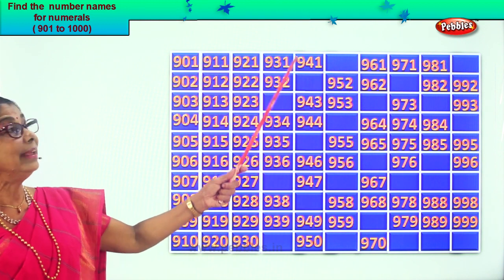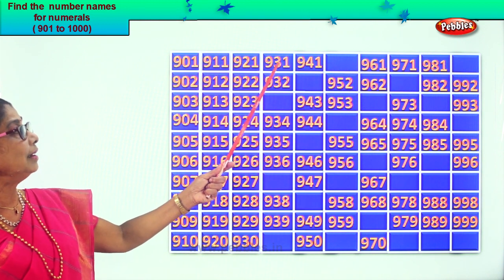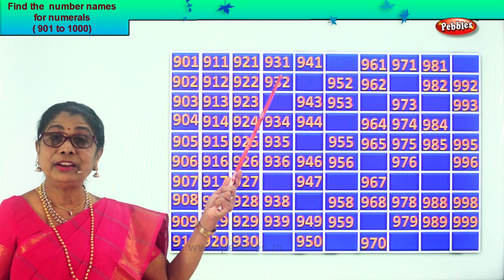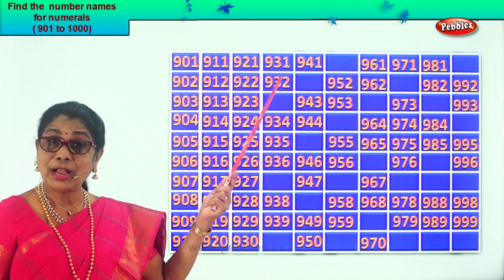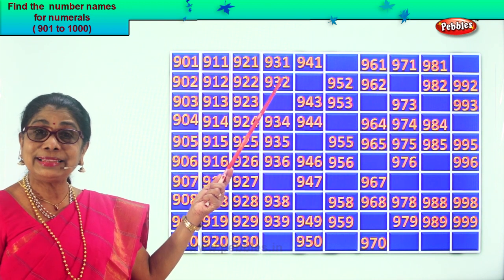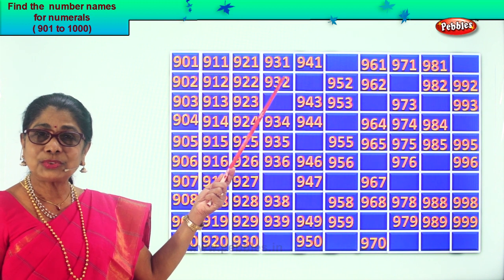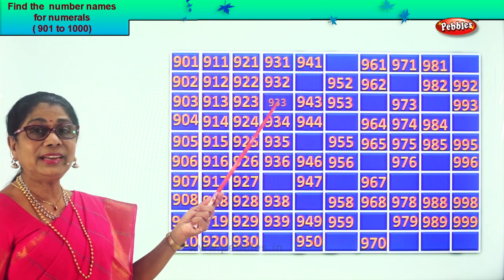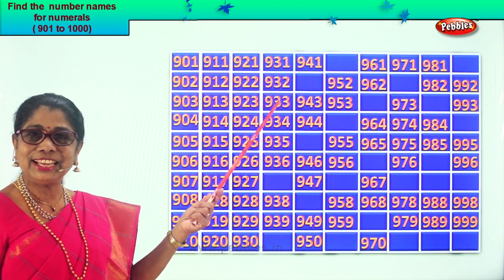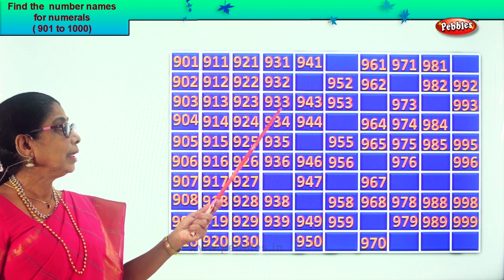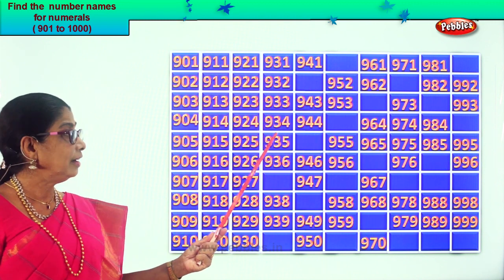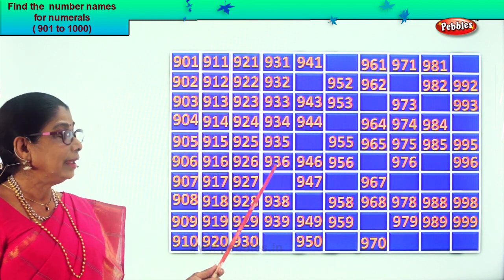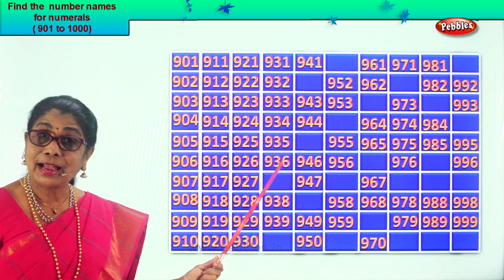After that: 931, 932. After 32 comes 33, so the next missing number is 933. 934, 935, 936.